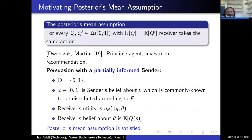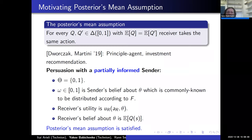What motivation can we give for the posterior mean assumption? Dvorak and Martini gave several motivations following essentially from risk aversion of the receiver in their principal-agent setting, with examples including investment recommendation where this assumption is natural. But let me give yet another motivation that has not been mentioned in Dvorak and Martini or in other papers — I think it's quite a cute interpretation.